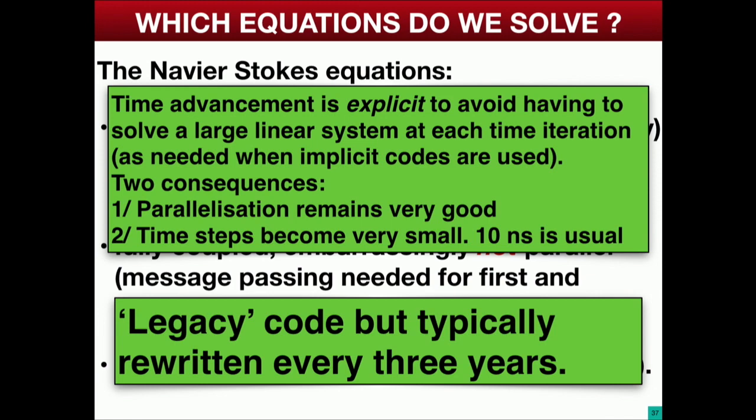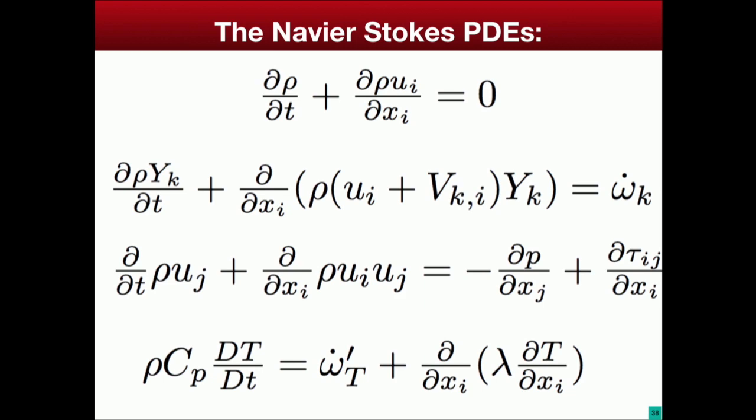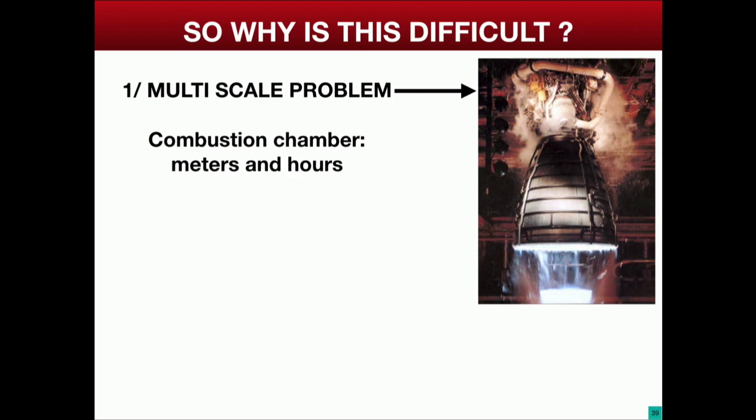It's what we call a legacy code, but we follow all the developments in HPC very closely, which means we typically need to rewrite the code every two or three years — which is getting to be a problem now, as a large part of the team has to do that. So why is this difficult? We have the equations — why is it a problem? Because it's a multiscale problem.